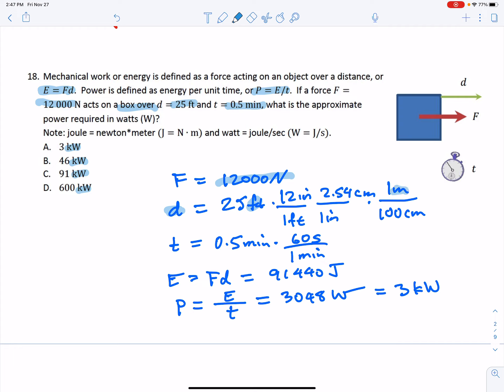After that, I'm going to eventually get to an average power. So I take the energy from the formula force times distance, which now I know because I use the right units is 91,440 joules. I divide by t, which was given in minutes so I convert that to seconds. I take the 91,440 joules and divide by 30 seconds to get that it's approximately three kilowatts. So that's my answer for problem 18.